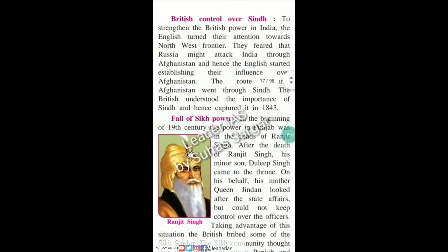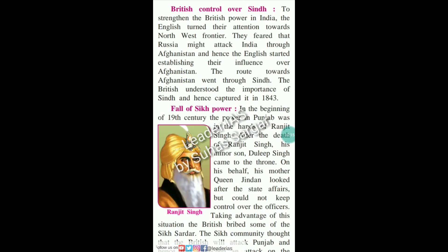To strengthen British power in India, the English turned their attention towards the northwest frontier. They feared that Russia might attack India through Afghanistan, and hence the English started establishing their influence over Afghanistan. The route towards Afghanistan went through Sindh. The British understood the importance of Sindh and hence captured it in 1843.